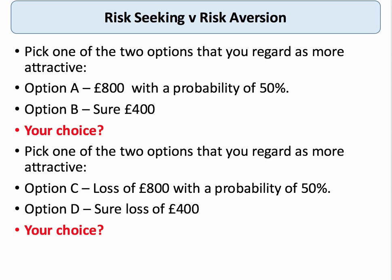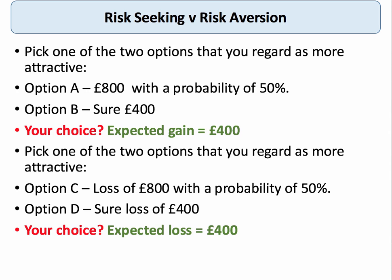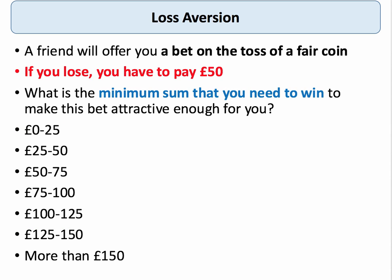Loss aversion refers to people's tendency to prefer avoiding losses to acquiring equivalent gains. Psychologists claim it's better to not lose 20 pounds than to find 20 pounds. In these scenarios, the expected gain and expected loss are both 400 pounds, but typically people are more willing to take Option A — the 50% chance of 800 pounds — yet switch to Option D to avoid the sure loss. This is what we mean by loss aversion.